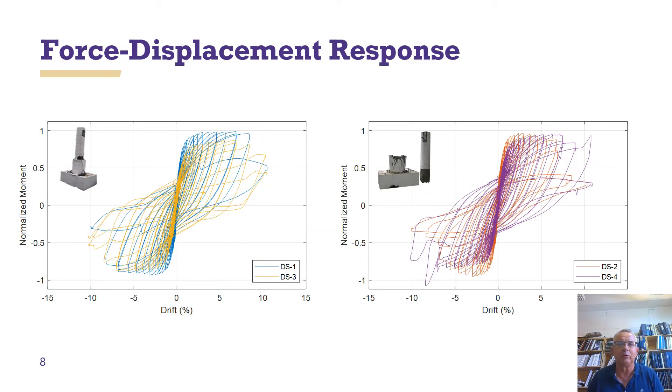If we now look at the details of force displacement response, on the left-hand side, we have DS1 and DS3. Those are the two column failures. On the right-hand side, we have DS2 and DS4. Those are the two connection failures, and they actually both do pretty well for a while. But the force deformation response of the shaft failure degrades faster than that of the column failure.